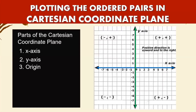The origin is the intersection of your x-axis and y-axis. The origin has a coordinate of (0, 0) and is the starting point on our number line.